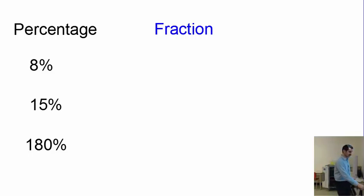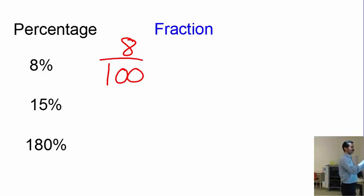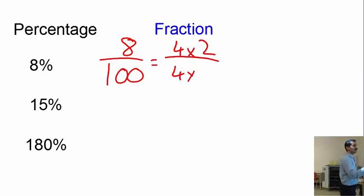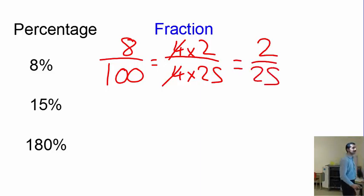Next is from percentage to fraction. For 8%, the 8 goes on top and you write 100 on the bottom, giving 8 over 100. But we must simplify: both are divisible by 4 — 4 times 2 is 8, and 4 times 25 is 100 — so we get 2 over 25.